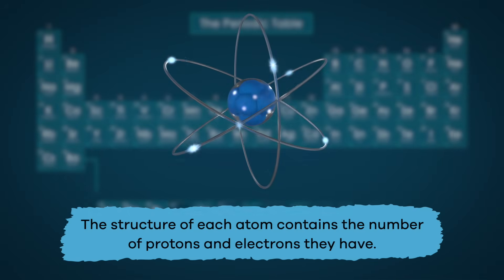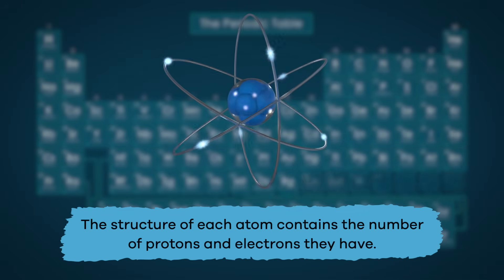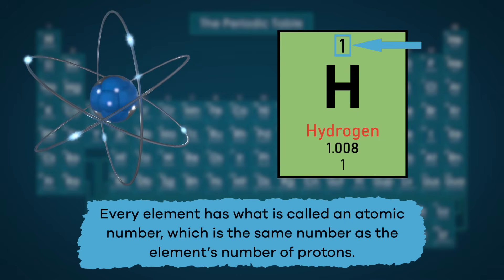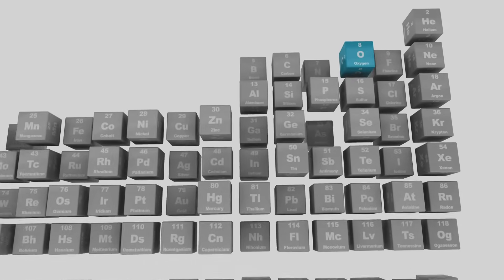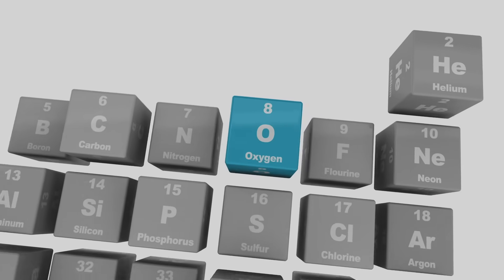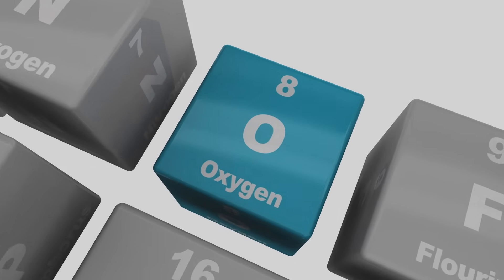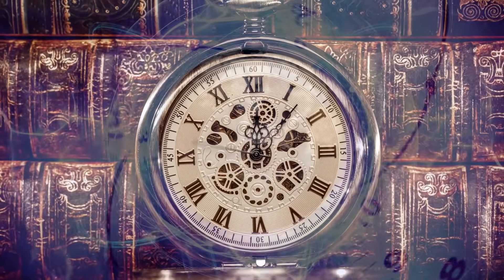The structure of each atom contains the number of protons and electrons they have. Because of this, every element has what is called an atomic number, which is the same number as the element's number of protons. Why is this atomic number important? Well, that is where the periodic table of elements comes in. But first, let's go back in time for a minute.